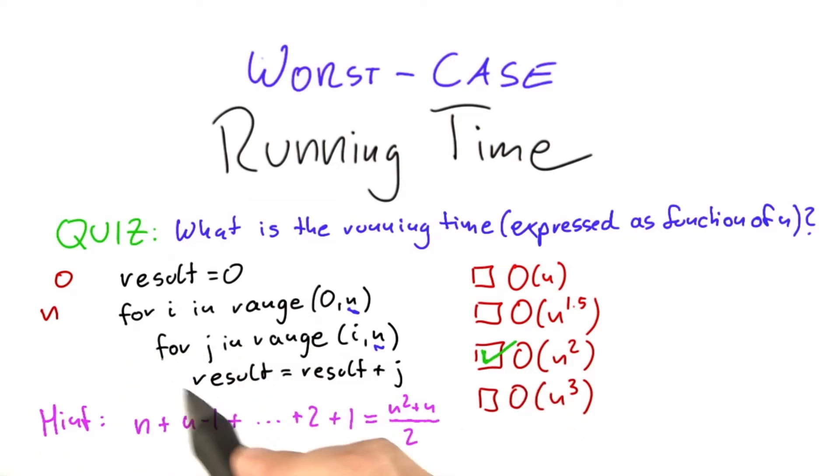How often is this inner loop here executed? So the first time, it's actually executed n times. Then the next time it's executed, it's going to be executed only n minus 1 times. And so on and so on because this i here, this value here, increases. And as this increases, this inner loop here is going to be executed less and less times.